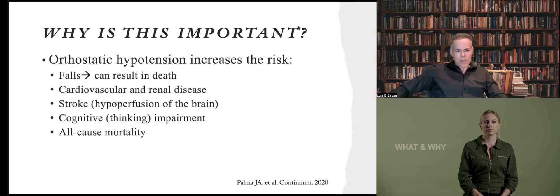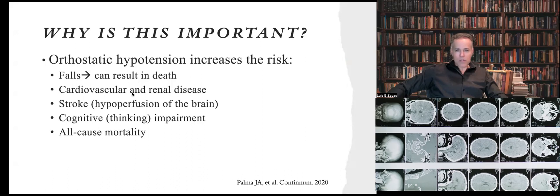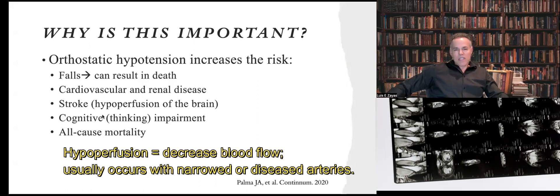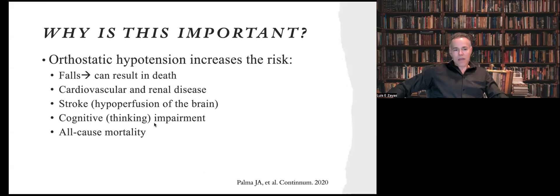What we are discussing about orthostatic hypotension is important because it increases the risk of falls, which can result in death. It increases the risk of having cardiovascular diseases and renal diseases, and increases the chances of having a stroke. The most likely mechanism is hypoperfusion of the brain — decreasing the flow of blood to the brain — as well as cognitive impairment, and it contributes to all causes of mortality.